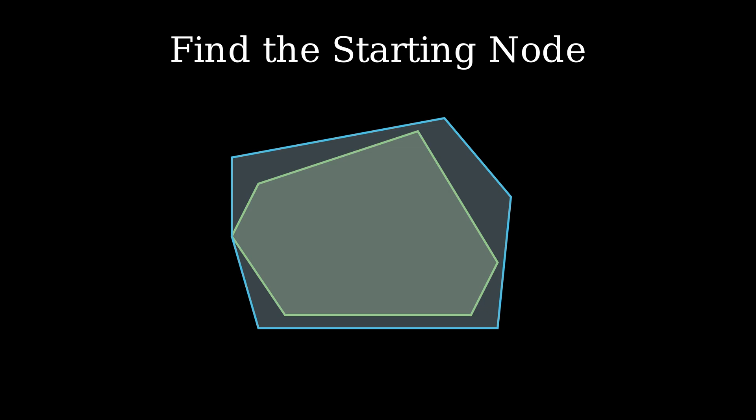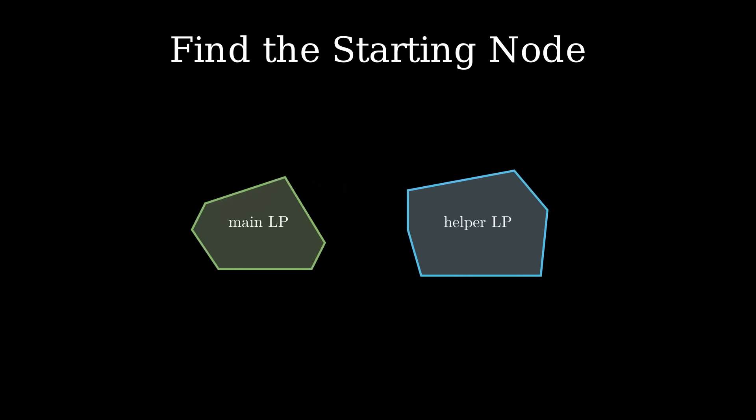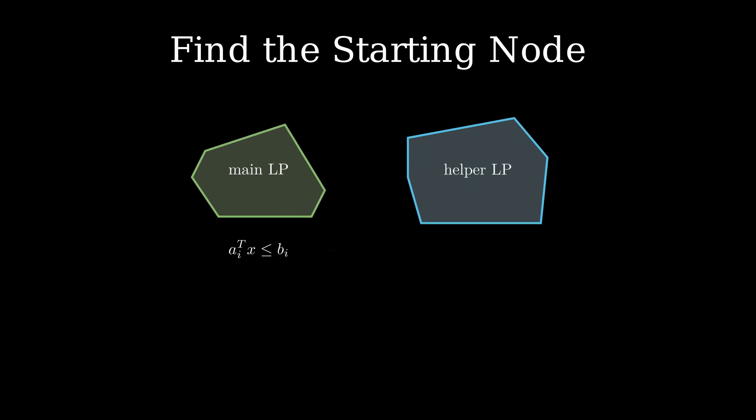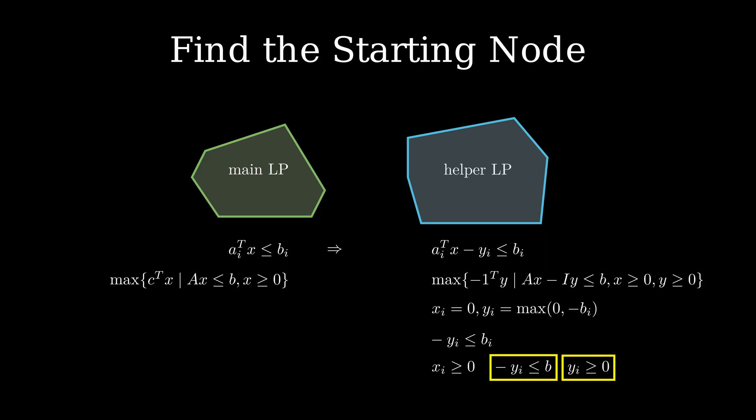This helper LP will use more variables and therefore lies in a much higher dimensional space than the original. Given the main LP, we construct the second auxiliary LP by introducing a new helper variable y. In the helper LP, we adjust each constraint by subtracting y from it. We can write down the LPs in the canonical form the following way. Note that we try to minimize the y variables in the auxiliary LP. Now we try to solve the helper LP. Because of the new variable y, we can construct a starting node of the polytope. We set all x to 0. This reduces our constraints to y and b only. We also set y to the maximum of 0 and minus b. Now every variable has at least one tight constraint. The x's are all tight with regard to this constraint. Moreover, each y variable is tight with one of the two constraints depending on the sign of b. Therefore, this constructed point is a valid node of the helper polytope.